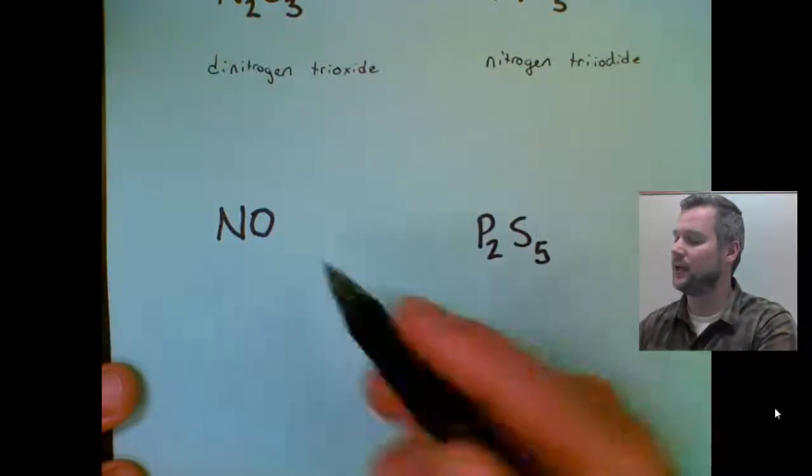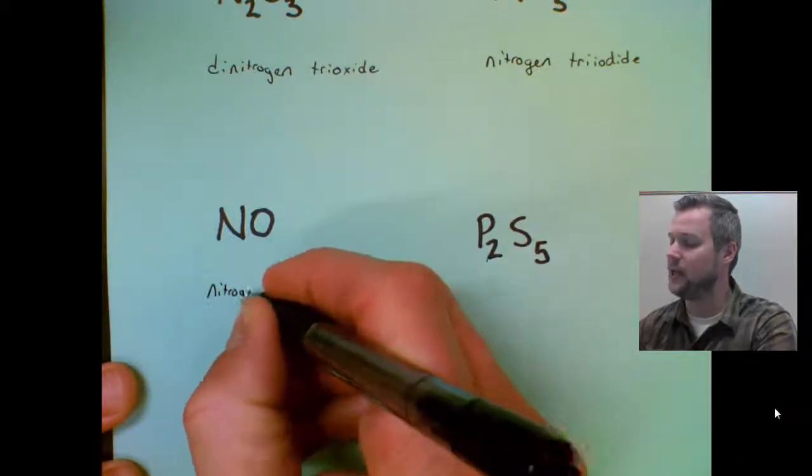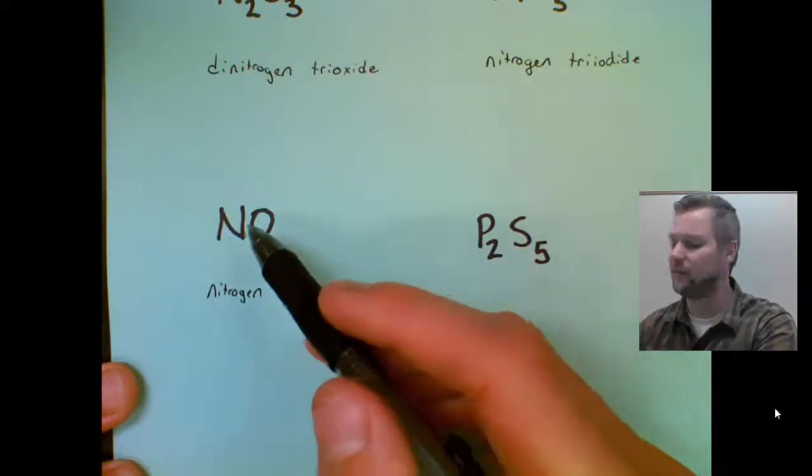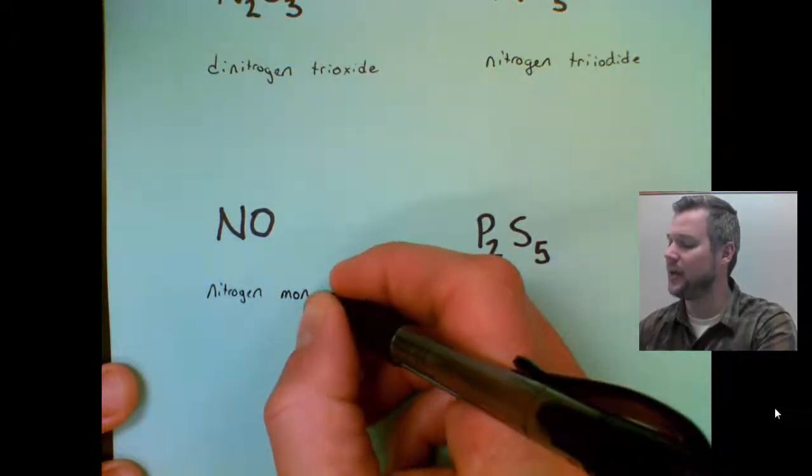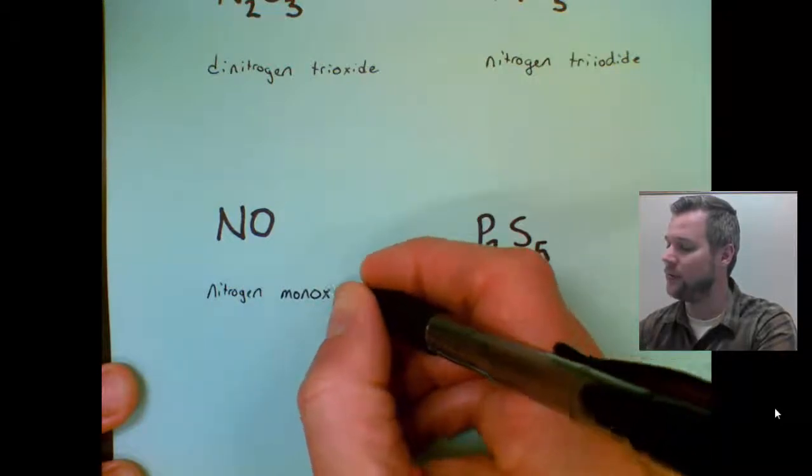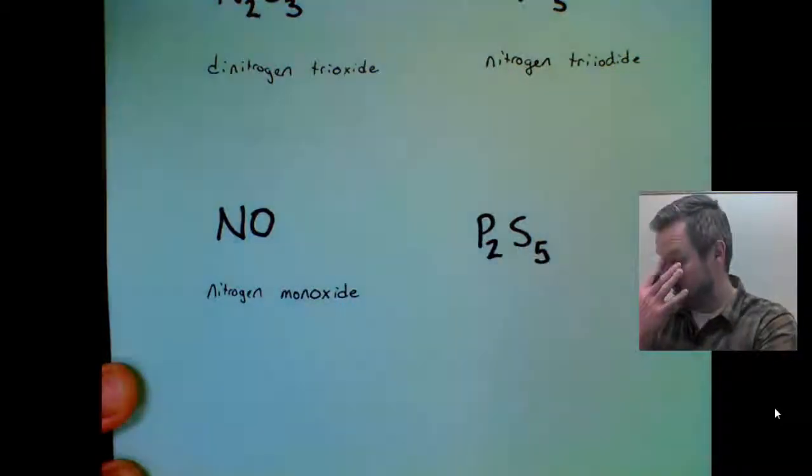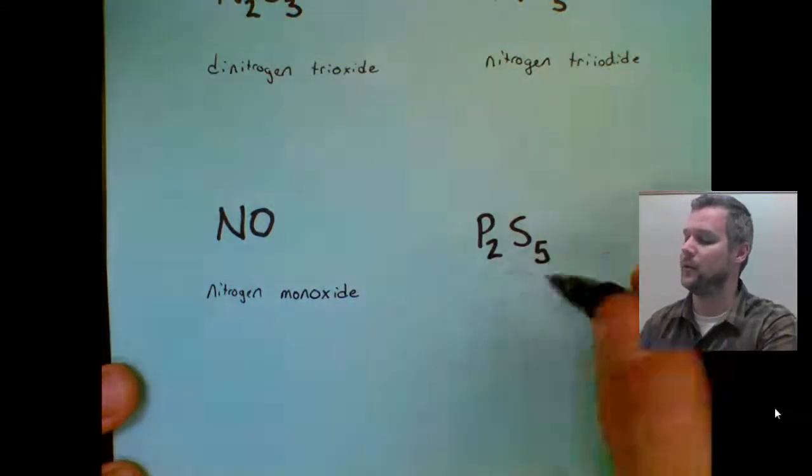Third substance, nitrogen again. We don't need the prefix because there's only one copy of the first atom. But the second atom, we are always doing a prefix. And you can write mono-oxide, but we drop the double O in this case. I would not mark that wrong if you do a double O, but this would be a better name.